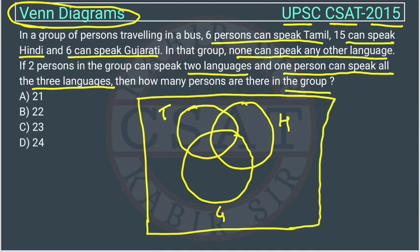The outside region is 0, meaning no person speaks a language other than these three. There is 1 person who can speak all three languages, placed in the center intersection.